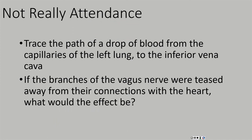Let's begin with our not-really-attendance questions. Trace the path of a drop of blood from the capillaries of the left lung to the inferior vena cava. And if the branches of the vagus nerve were teased away from their connections with the heart, what would the effect be? Try to answer these on your own without looking at any notes, just to see how well everything's staying with you.